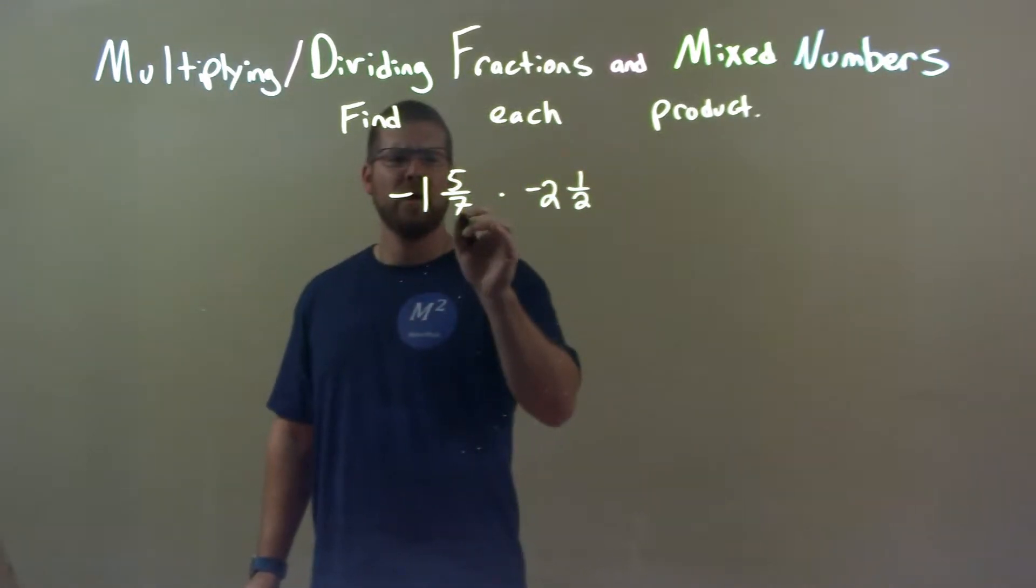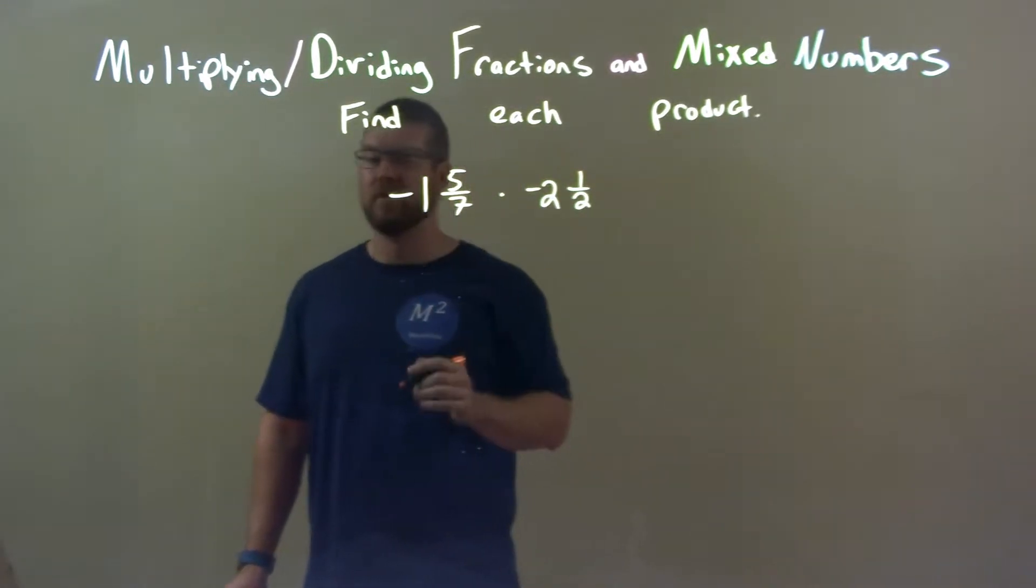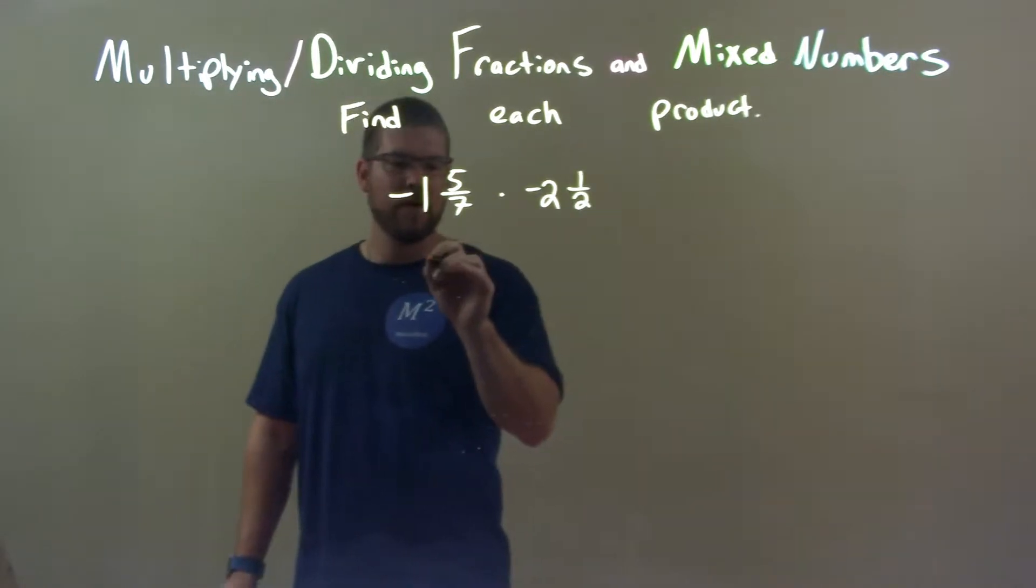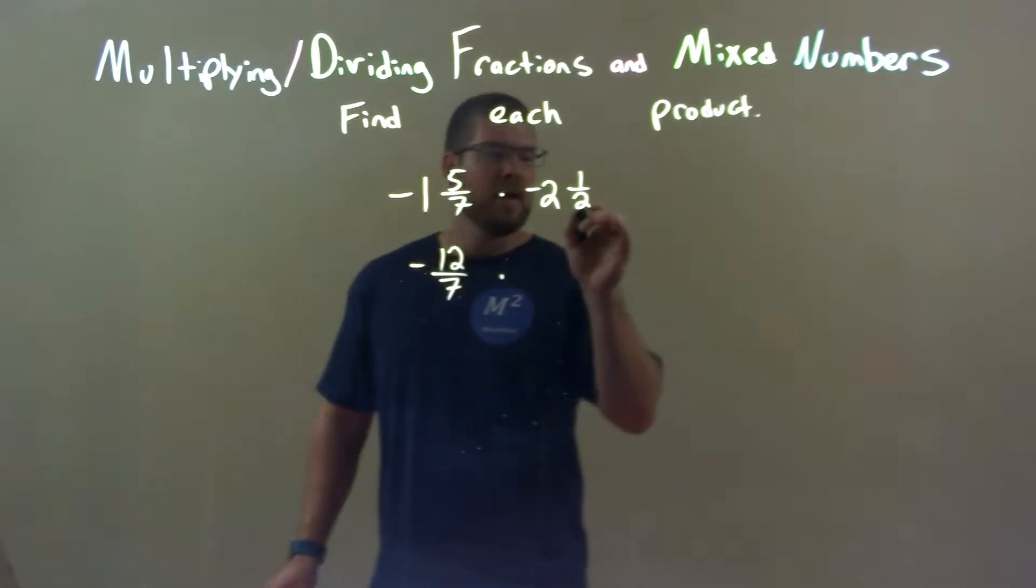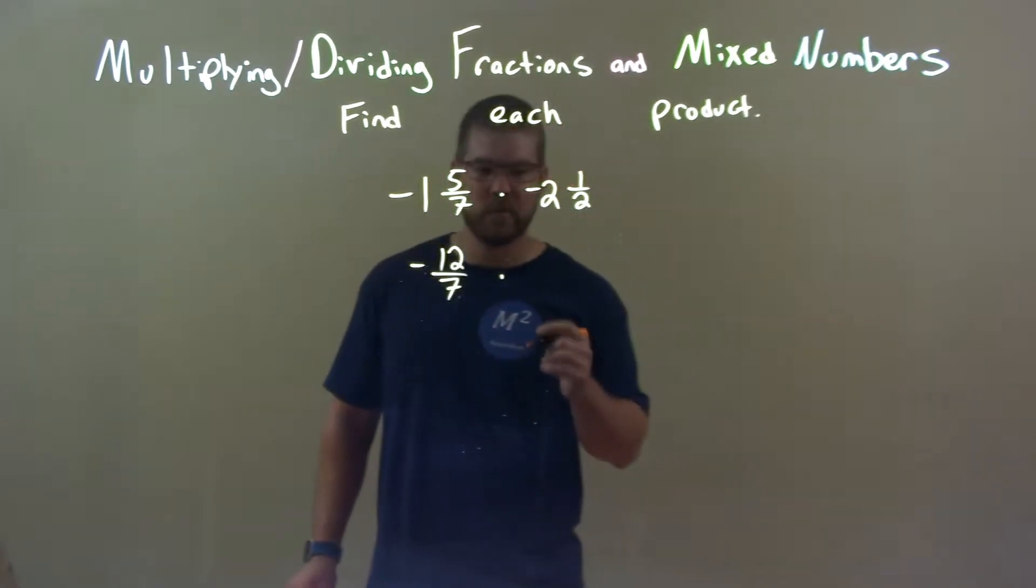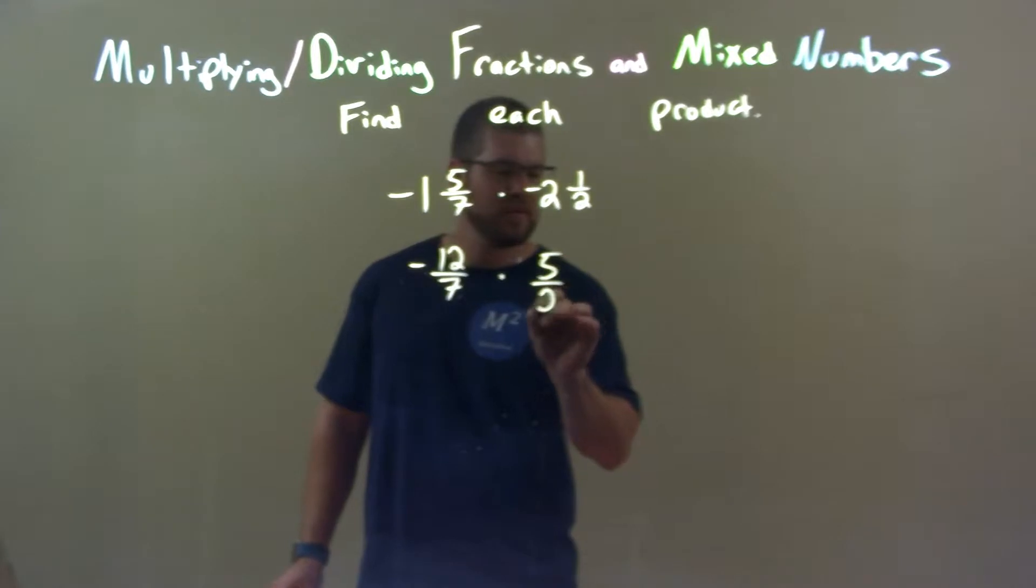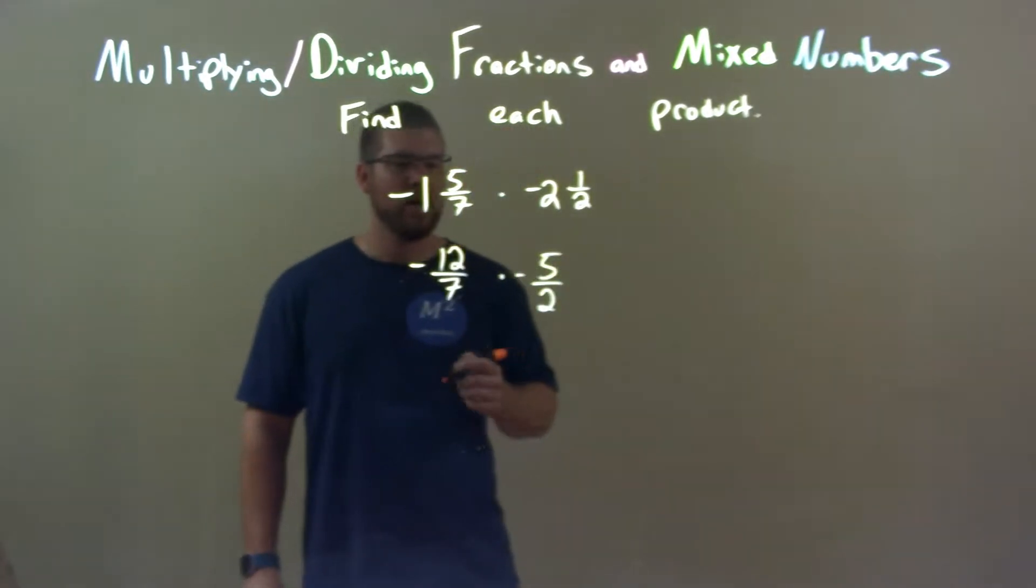So, 7 times 1 is 7, plus 5 is 12. So, negative 12 over 7. Don't forget the negative. 2 times 2 is 4, plus 1 is 5. 5 over 2. Don't forget that negative.